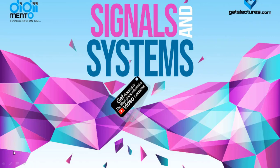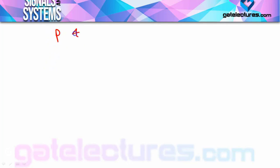Hello students, in the last video we completed energy and power signals. Now in this video we will start with the last classification of signals - periodic and non-periodic signals. We will study what is a periodic signal and what is a non-periodic signal in case of continuous time and discrete time.